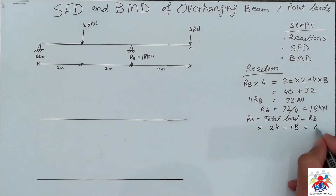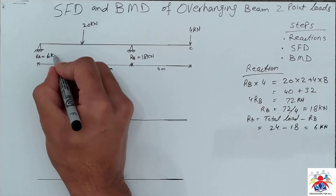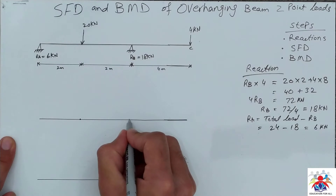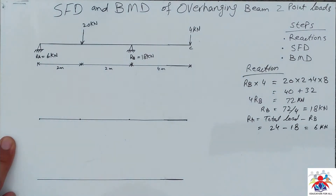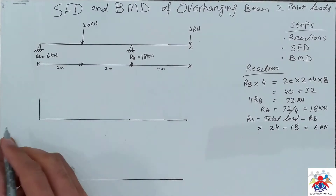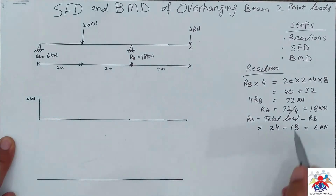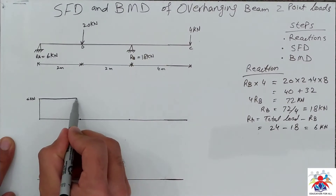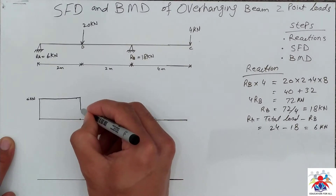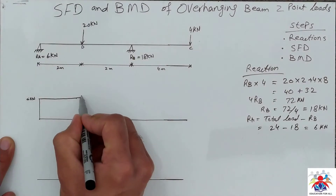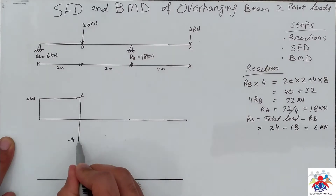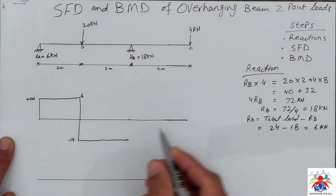Based on the reactions we can draw the shear force diagram. We have four points: A, B, C, and D. At point A we have a reaction of 6 kilonewton, so it goes upwards — 6 kilonewton. We have 20 kilonewton acting downwards at point D, so we go from 6 down to minus 14.